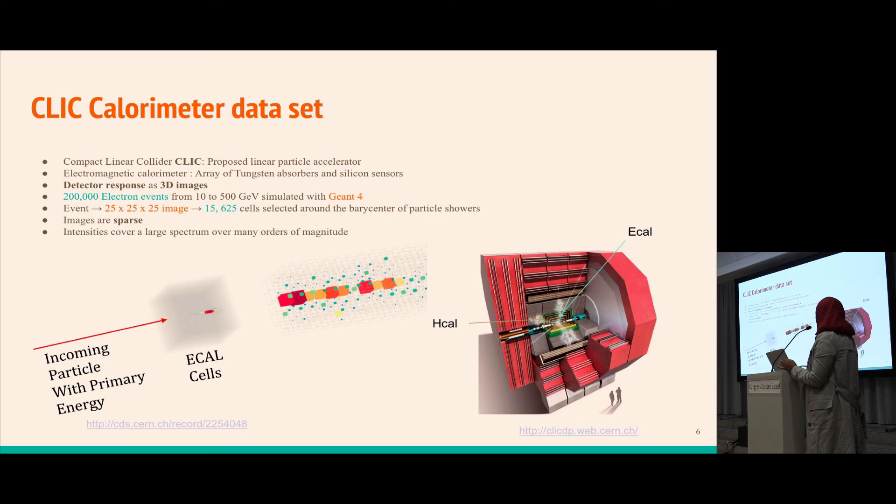The CLIC detector consists of an electromagnetic calorimeter and a hadronic calorimeter. For this work we only used the e-cal data with 200,000 electron events from 10 to 500 GeV simulated using Geant4. Each event is a 25 by 25 by 25 image with 15,000 cells selected around the center of the particle shower.